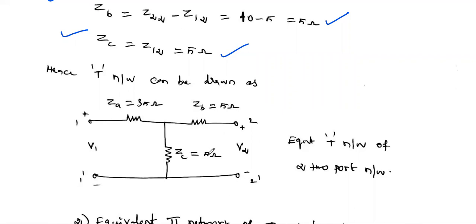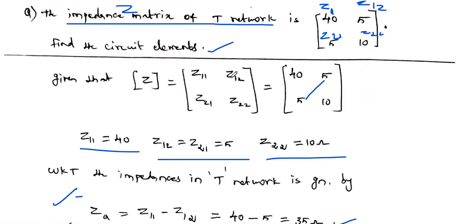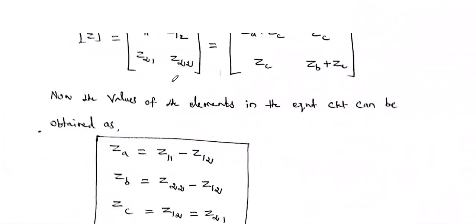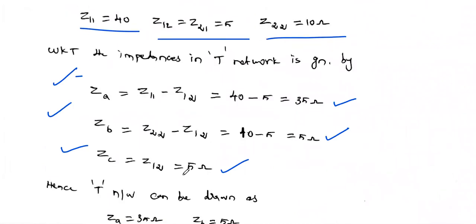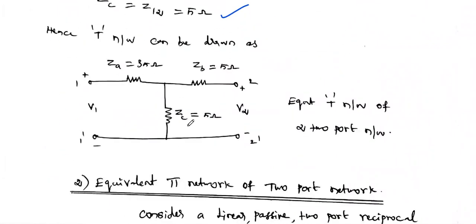There is another type of problem: if ZA, ZB, ZC are given and the question asks you to construct the impedance matrix. For example, if ZA = 35, ZB = 5, ZC = 5, then: Z11 = ZA + ZC = 35 + 5 = 40, Z22 = ZB + ZC = 5 + 5 = 10, and Z12 = Z21 = ZC = 5. So in reverse you can also get this type of problem. This is the method to find the T network element from the impedance matrix.